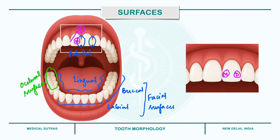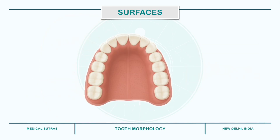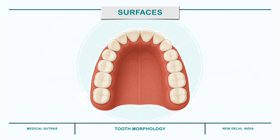To sum up our discussion on the surfaces of teeth: if we look at the upper left second molar, we have the buccal surface facing towards the cheek, palatal or lingual surface towards the palate or tongue, mesial surface towards the midline, distal surface away from the midline, and occlusal surface facing the opposite teeth.